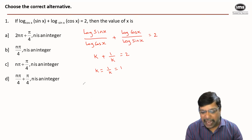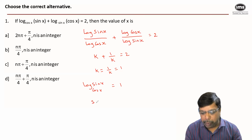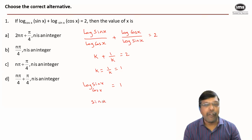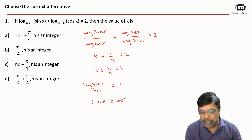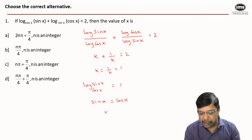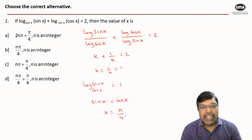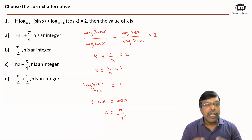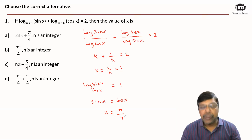Thereby I can say log sin x base cos x is equal to 1. By the definition of logarithms, sin x = cos x, and we know that sin and cos are equal when x is equal to 45 degrees or π/4. You can see that the value of x will be π/4 for any value of n from the first option.